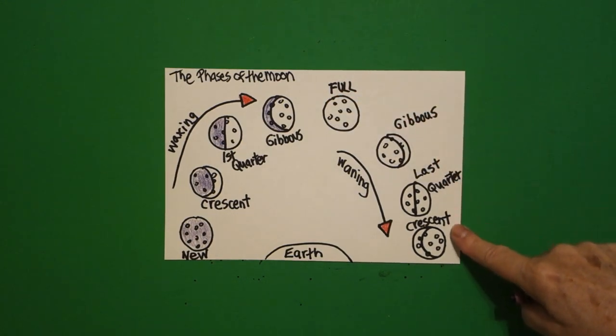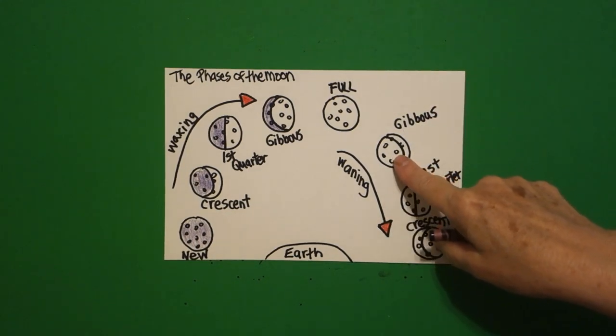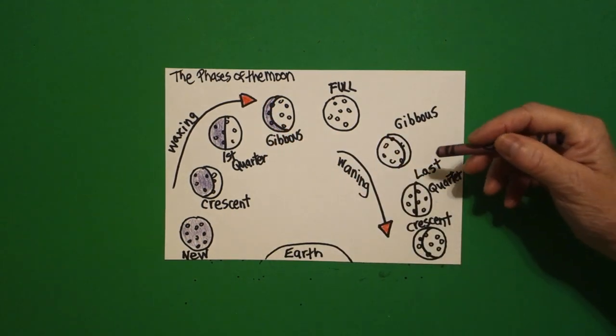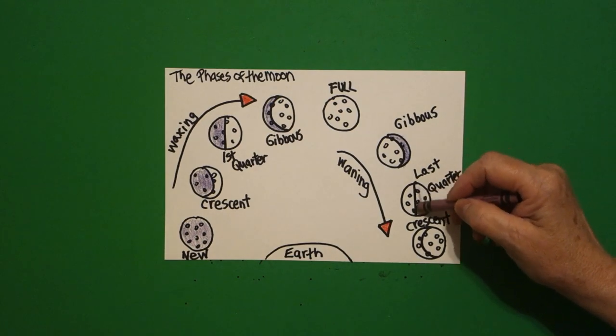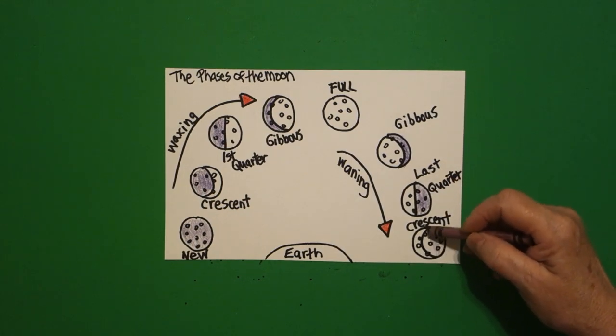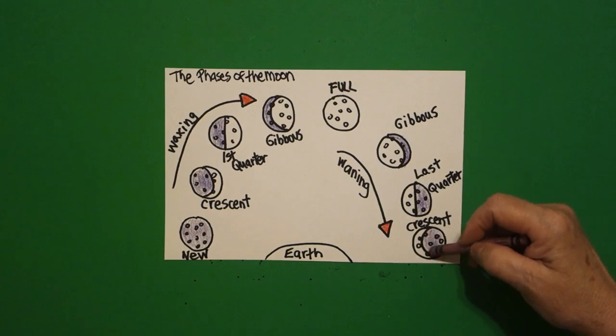Now, going back down, waning, we're going to do the opposite. So gibbous, whereas on this side was colored in, now we color in the opposite side. This becomes gibbous. You still can see. Last quarter, we color the right-hand side, and crescent, we color this section. And as it moves its way over to new, you're going to come back with a whole colored moon phase.